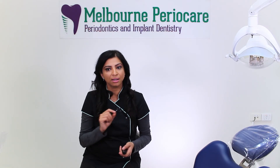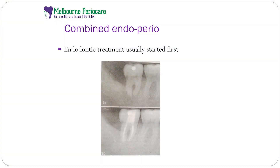The fourth big reason is a combined endo-perio problem. Usually endodontic treatment should be started first, and if there is resolution of the problem, we know we can continue with periodontal treatment and it should go well. However, the prognosis of such cases really depends upon the periodontal bone loss and attachment loss. So if the periodontal prognosis is poor, the tooth might have a really bad prognosis.